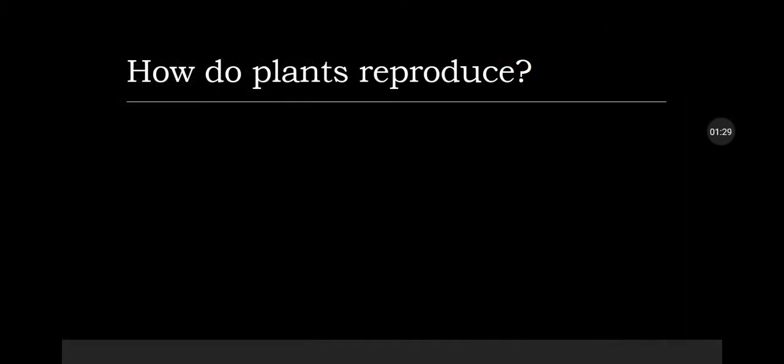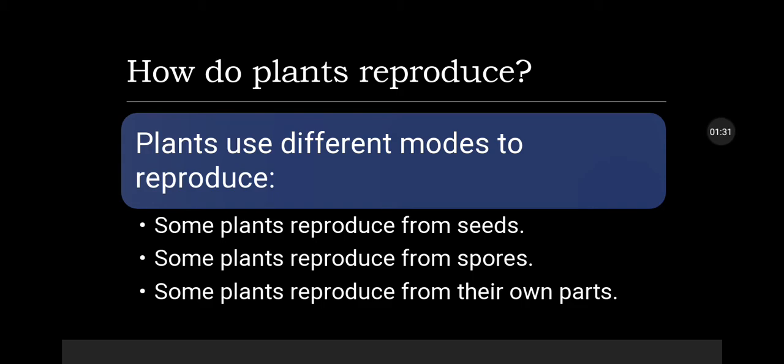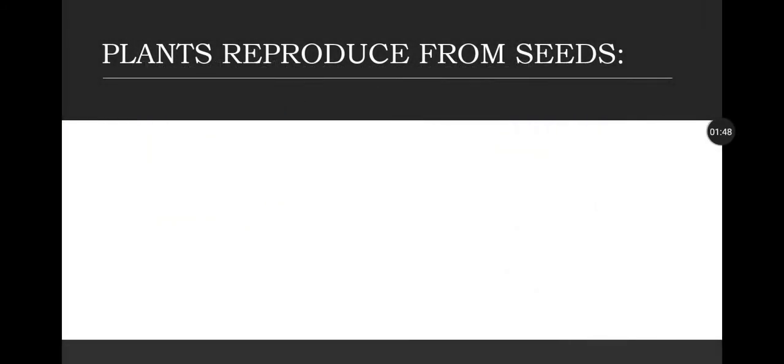How do plants reproduce? Plants use different modes to reproduce. Some plants reproduce from seeds, some plants reproduce from spores, and some other plants reproduce from their own parts. Let's move step by step. First of all, we will talk about plants that reproduce from seeds.